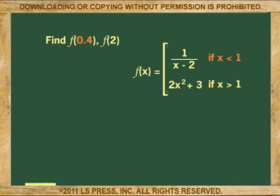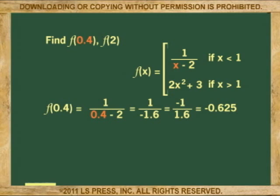Because 0.4 satisfies x is less than 1, we'll use the top part. Substituting 0.4 for x, the solution will read: The function of f at 0.4 equals 1 over 0.4 minus 2, equals 1 over negative 1.6 or negative 1 over 1.6. If you care to divide, the answer is negative 0.625.